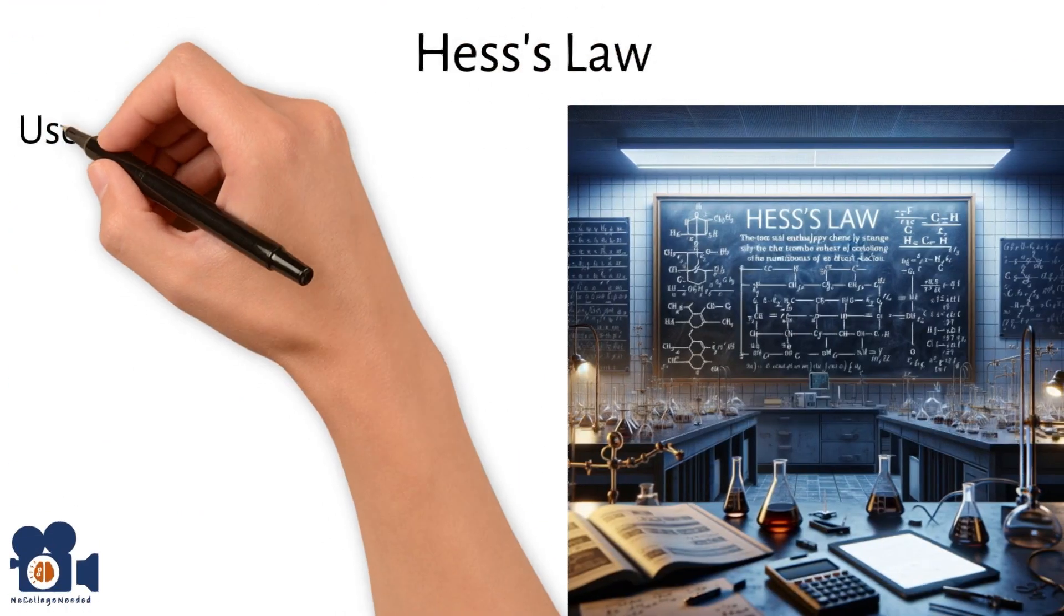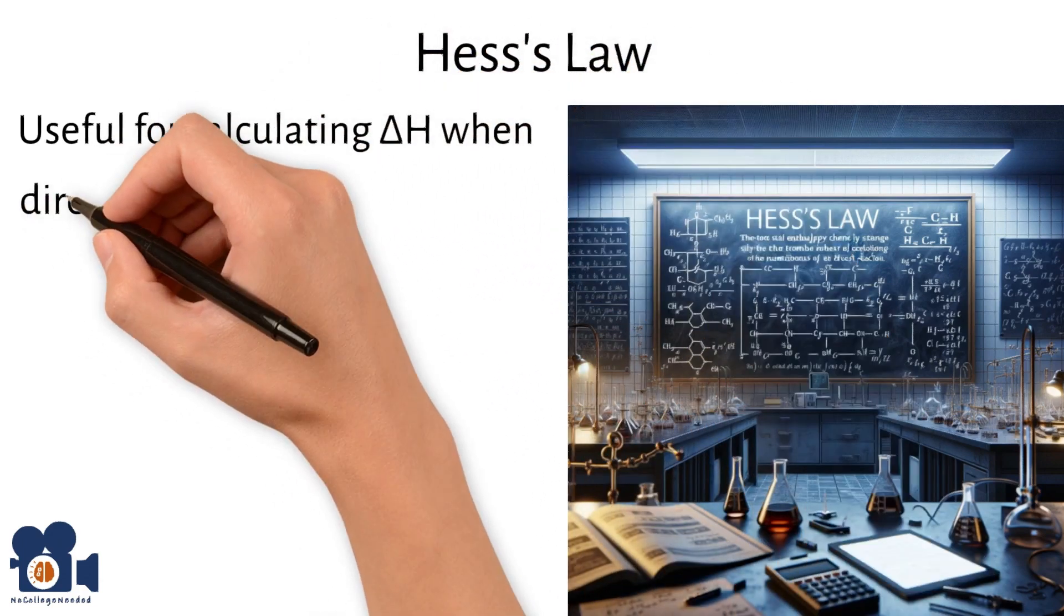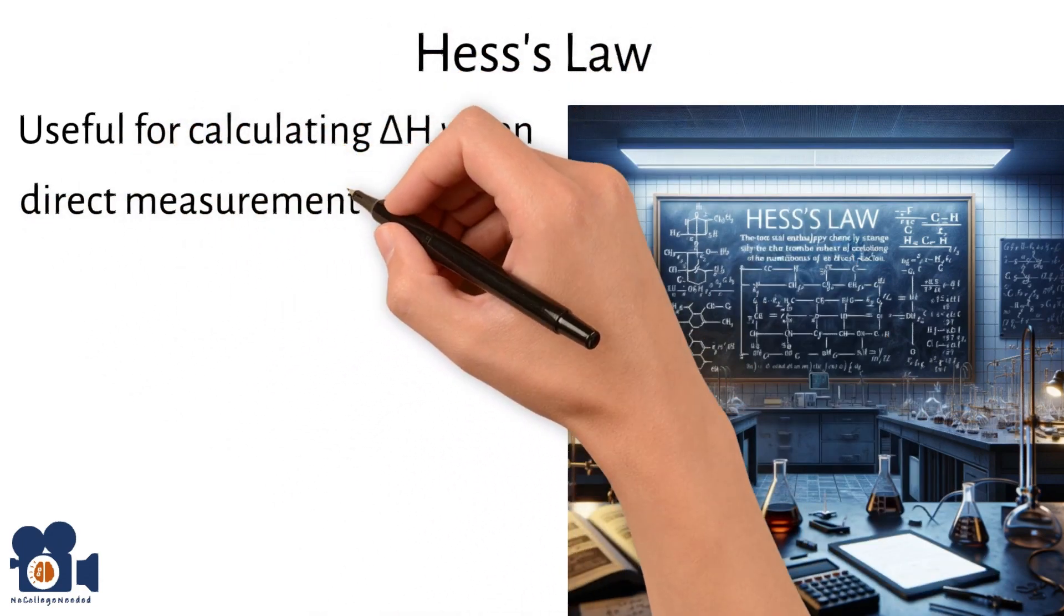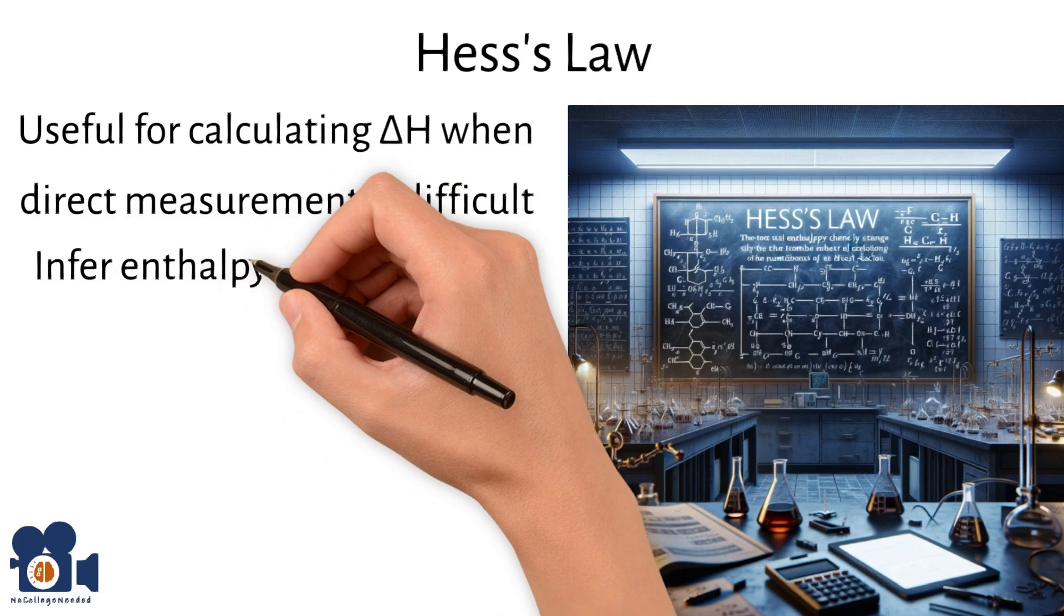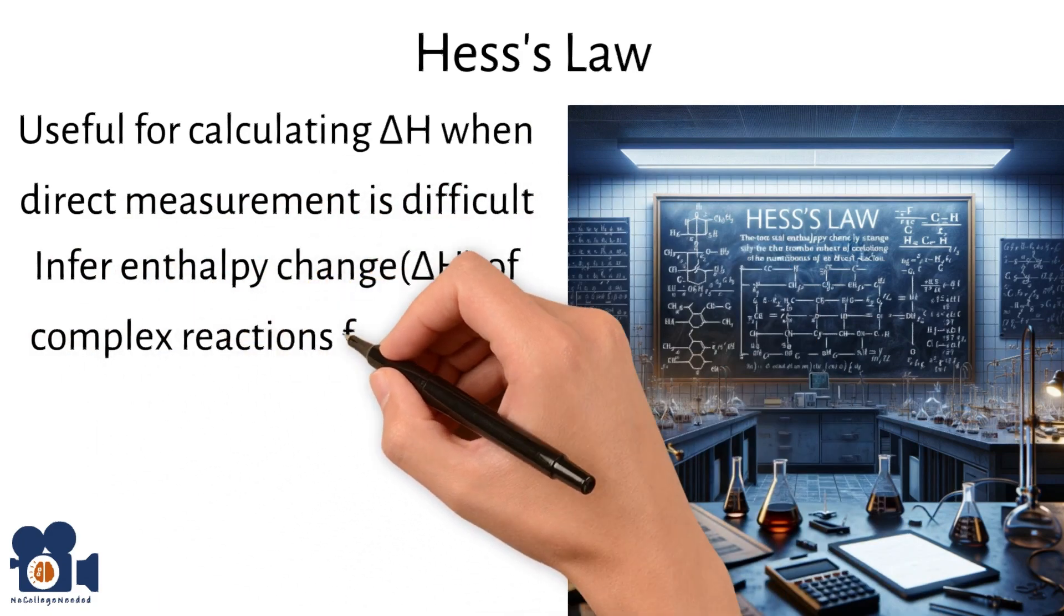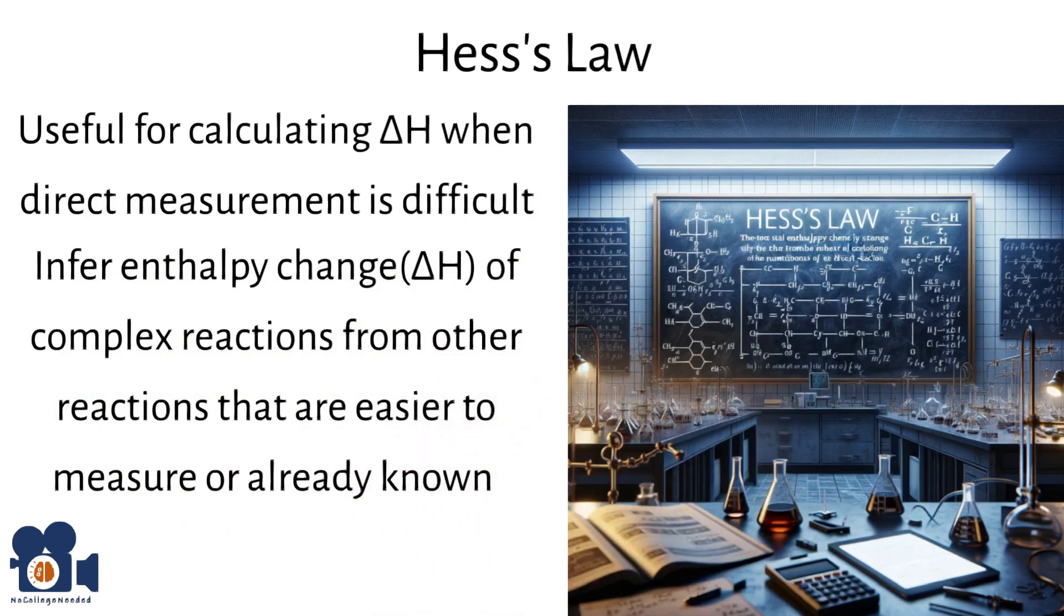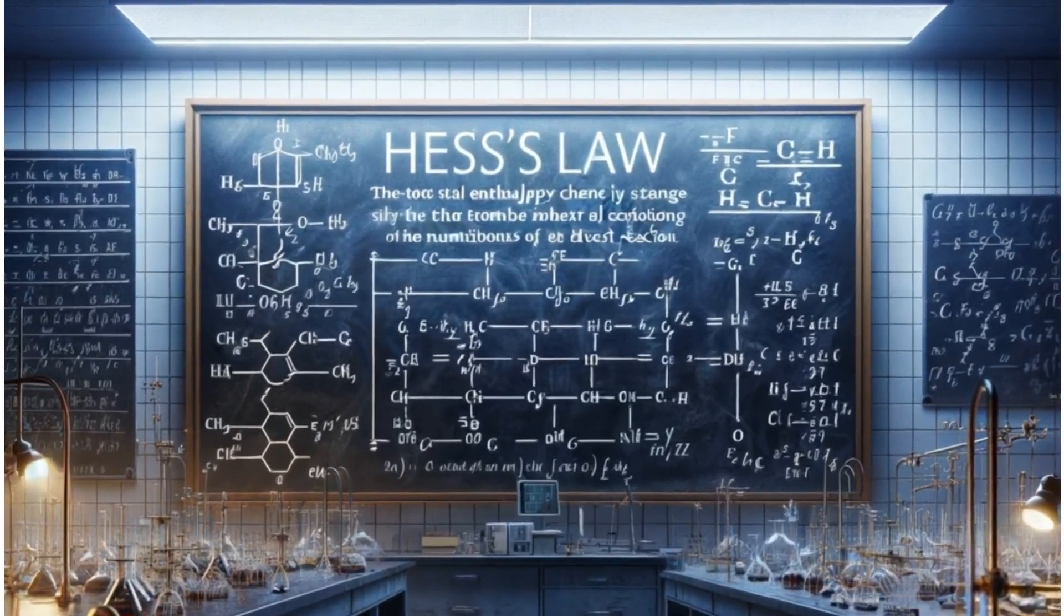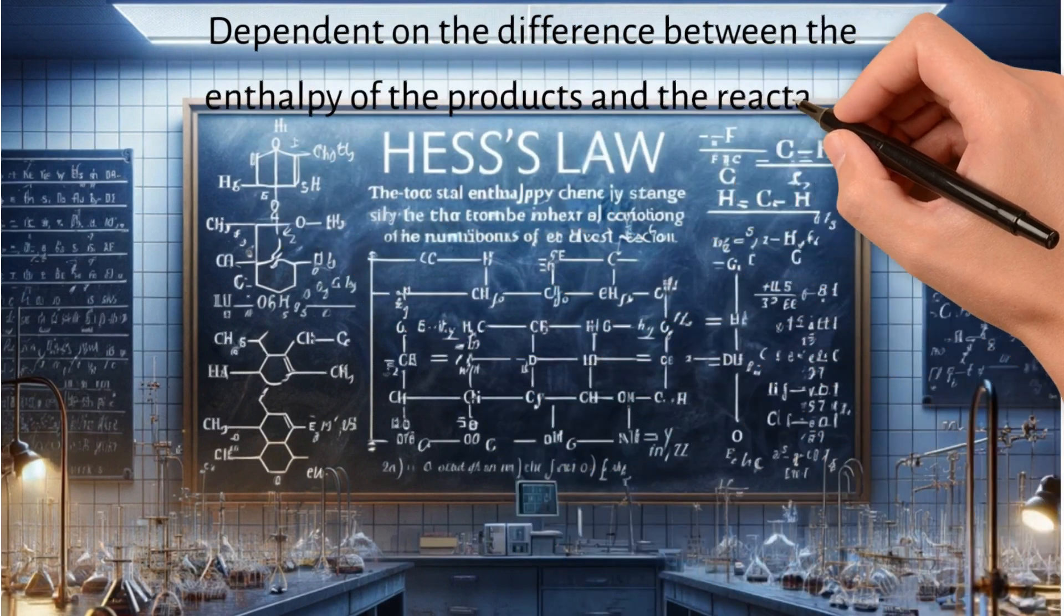Hess's law is particularly useful in thermodynamics for calculating enthalpy changes delta H for reactions where direct measurement is often difficult. It allows chemists to infer the enthalpy change of complex reactions by combining simpler reactions that are easier to measure or are already known. This is because the enthalpy change for a chemical process is dependent only on the difference between enthalpy of the products and the reactants and not on the specific pathway taken.